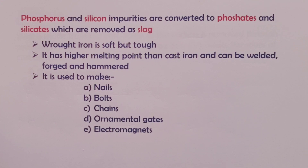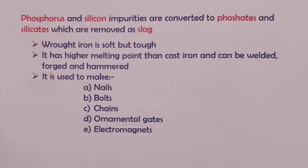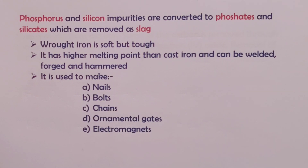Wrought iron is soft but tough. It also has a higher melting point than cast iron. We can weld, forge, and even hammer wrought iron without breaking it. Wrought iron is used to make nails, bolts, chains, ornamental gates, and electromagnets. We now move on to steel as the last type of iron.